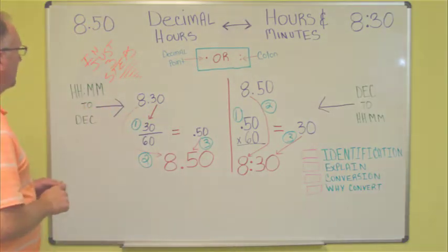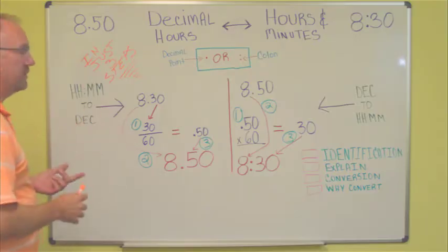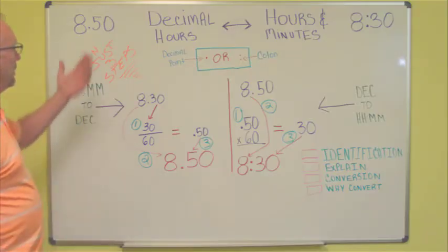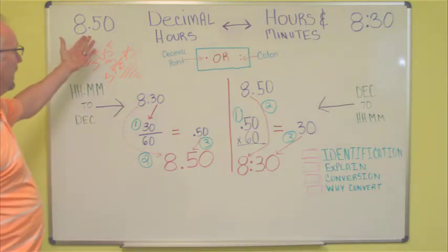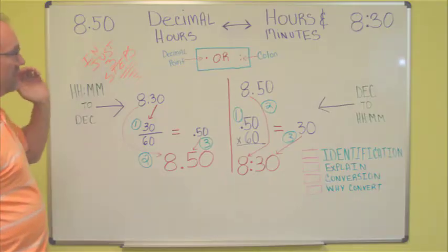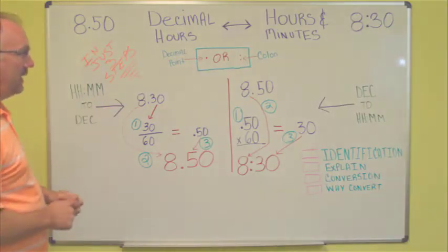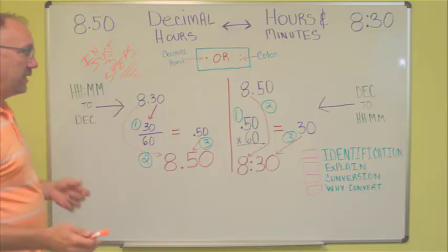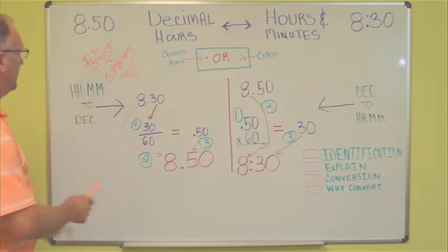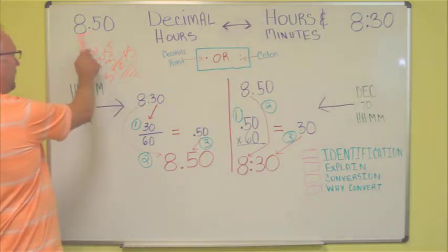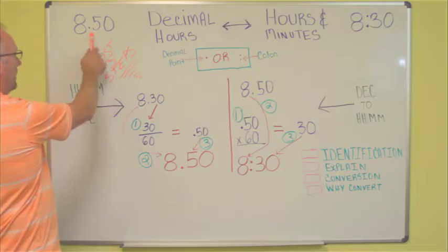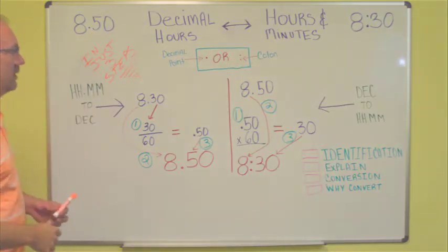Secondly, we'll explain what these two formats mean. Some people look at this as 8 hours and 15 minutes. Some people will think that that's 8 hours and .3. Whenever you see a decimal point, we will look at the .50 as a fraction of an hour.